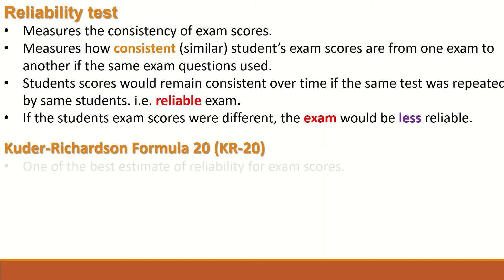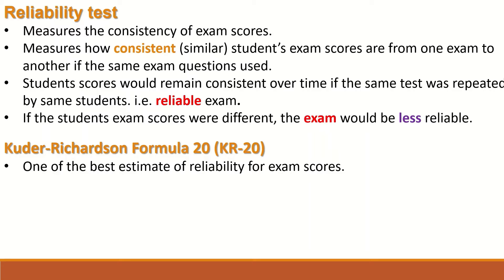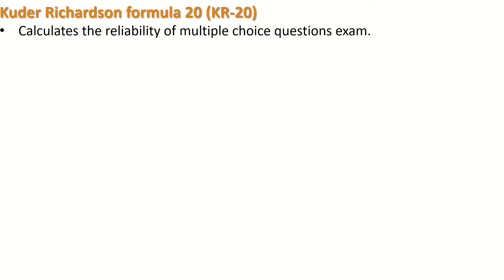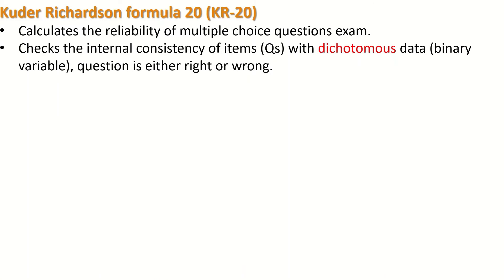Kuder Richardson Formula 20, abbreviated as KR20, is one of the best estimates of reliability for exam scores — specifically exams that have only multiple choice questions. The KR20 calculates the reliability of a multiple choice question exam and checks the internal consistency of items or questions.